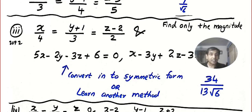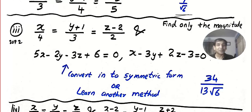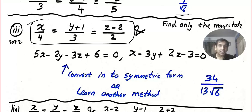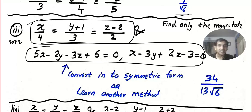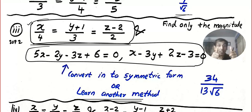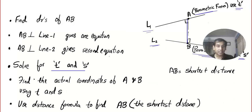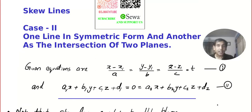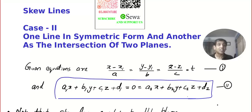This brings us to our next video. Sometimes the question paper will give you a line and another line expressed as the intersection of two planes — that is Case 2. If you want to learn that method, watch the next video. If you don't want another method, that's okay — you can convert the intersection form into symmetric form. I'll be back with the next video where we learn Case 2, where one line is in symmetric form and the second is written as the intersection of two planes.